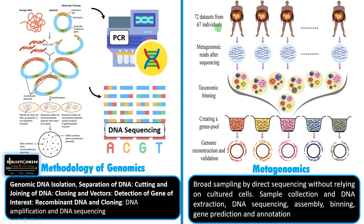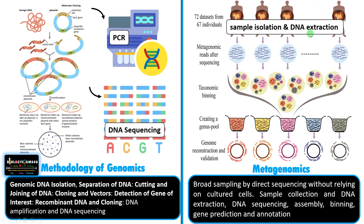In metagenomics, broad sampling is done by direct sequencing without relying on cultured cells. Taking an example from 67 individuals' gut microbiome studies: first the sample is isolated, followed by DNA extraction, then DNA sequencing such as shotgun sequencing. The short sequences are then assembled to reconstruct individual genomes.